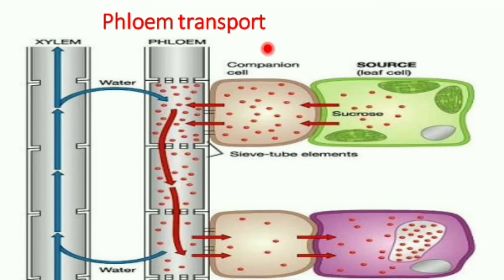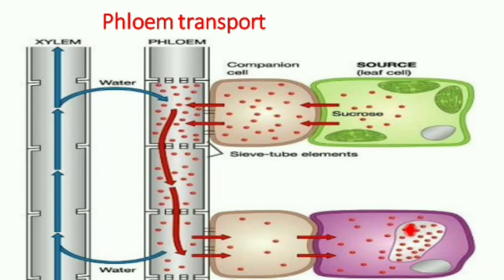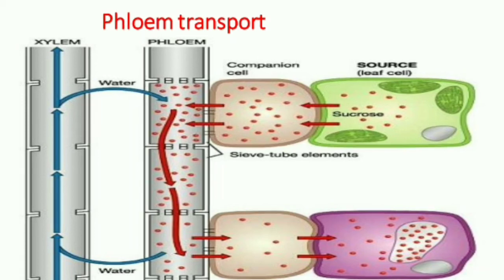Phloem transportation is otherwise called the source and sink relationship. The leaf is the source of the plant where food is prepared. Sucrose, a complex form of food, is transported to the various parts of the plant through the phloem. The sink is the storage part where the food gets stored, which may be any other part of the plant.